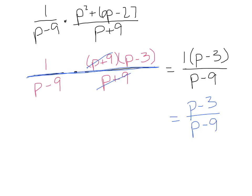Do not be tempted to cancel those p's out or simplify the 3 and the 9, because you can only cancel out common factors. Factors are things that are getting multiplied, not terms — terms are things that are getting added and subtracted. So we're done. Don't try to do anything further.